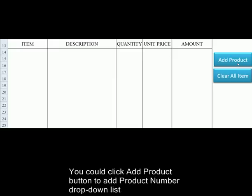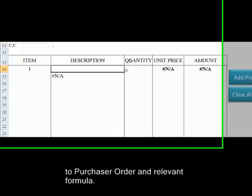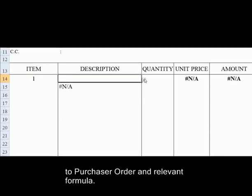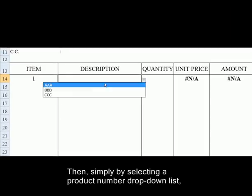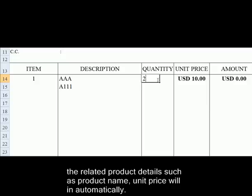You can click the Add Product button to add a product number drop-down list and purchase order with relevant formulas. Then, simply by selecting a product number from the drop-down list, the related product details such as product name and unit price will fill in automatically.